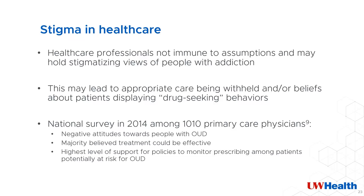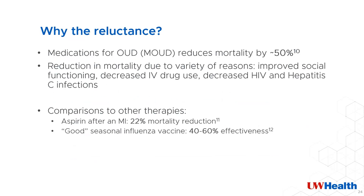The hope is that as treatment becomes more easily accessible after the elimination of the X-waiver, perhaps more PCPs are also willing to manage these patients in the future. So my question to you is: why is there such reluctance to providing medications for opioid use disorder? They have been found to reduce mortality by almost 50%. This reduction can be due to improved social functioning, decreased IV drug use, and decreased HIV and hepatitis C infections. Yet we don't think twice about prescribing aspirin after myocardial infarction, which only decreases mortality by about 20%, or a seasonal flu vaccine that is 40 to 60% effective. Why the reluctance around prescribing medications for opioid use disorder? I hope this is something you continue to think about today and in your future practice.